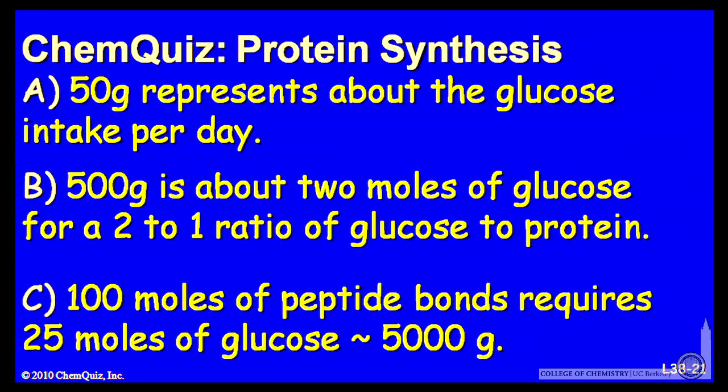C, 100 moles of peptide bonds requires 25 moles of glucose, so about 5,000 grams. Think about those three and make a selection.